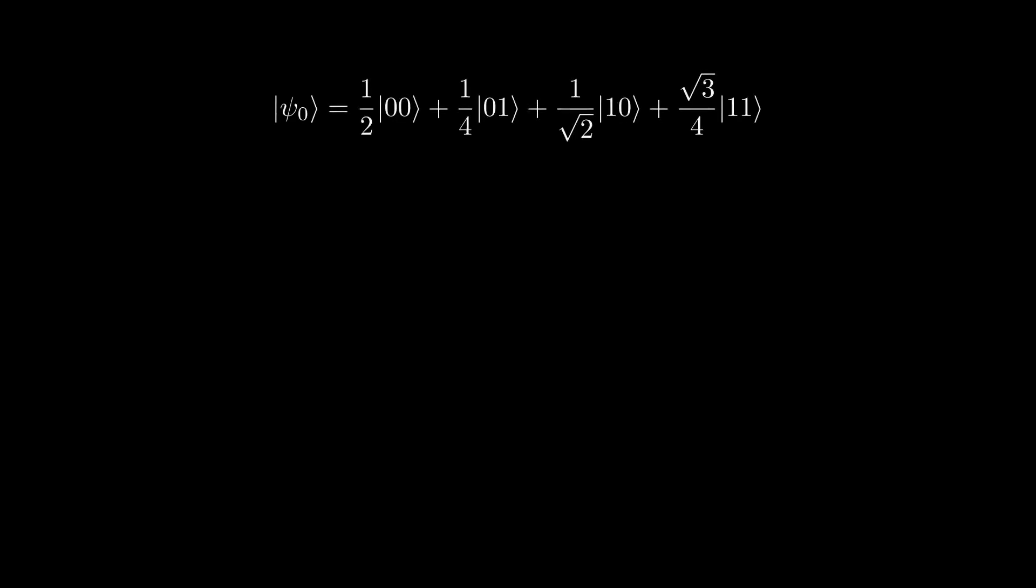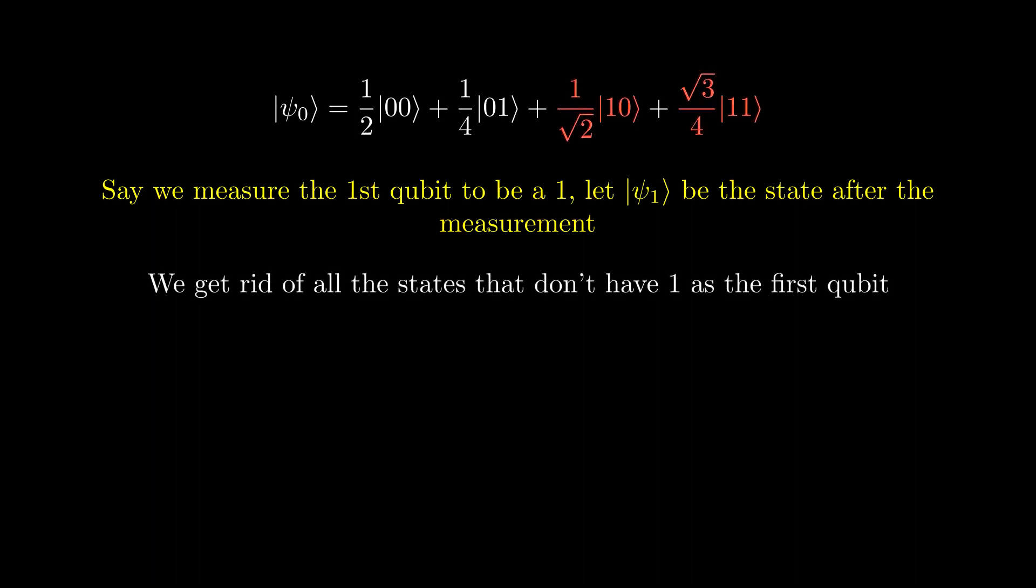Say we have this state, and we measure the first qubit to be a 1. Then the state collapses, and since the first qubit becomes a 1, we get rid of all the superposition states where the first qubit is not a 1.